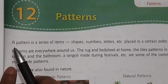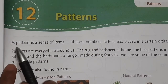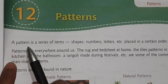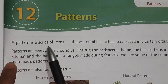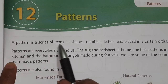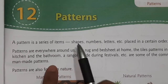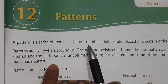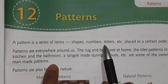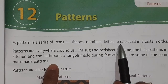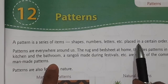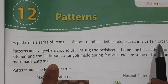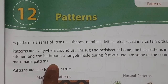What is a pattern? A pattern is a series of items — which are shapes, numbers, letters, etc. — placed in a certain order.